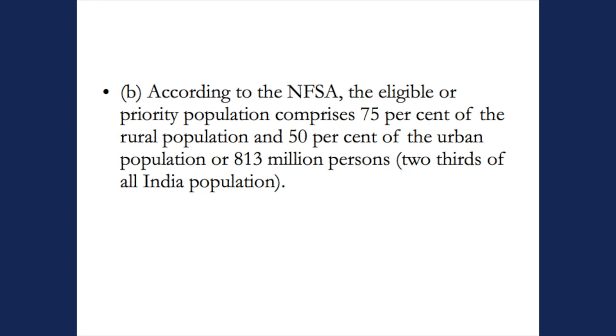The second number is what the National Food Security Act 2013 has defined as people who are food insecure in India, or for whom the right to food still needs to be ensured. That act has taken 75% of our rural population and 50% of our urban population, which works out to about two-thirds of the total population, or about 800 million.